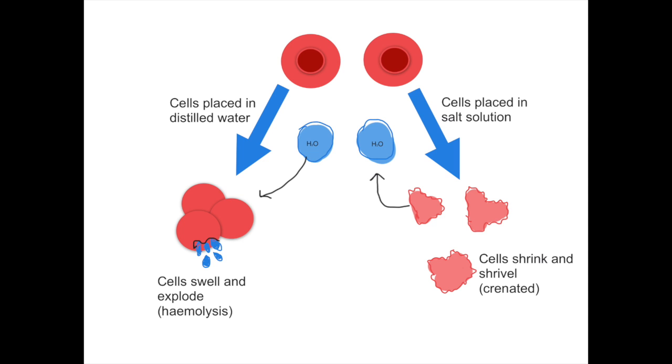Let's take animal cells now — I'm going to talk about a red blood cell, for example. If we place our red blood cell in a salty solution, because there's more water inside the red blood cell — similar to the plant cell — water will leave the cell and move outside, and the little cell will become all shrivelled up, and we call that crenation.